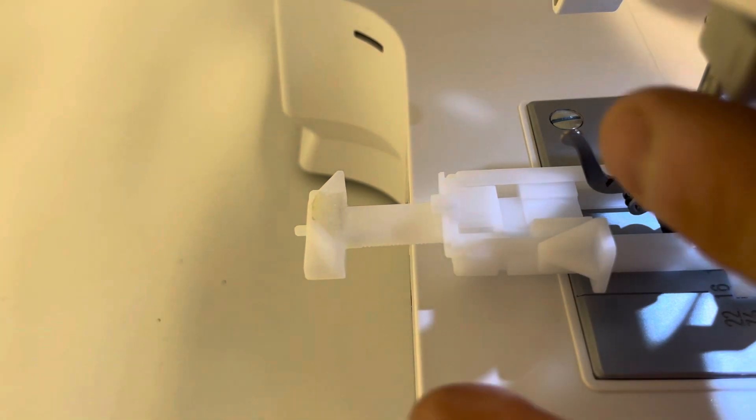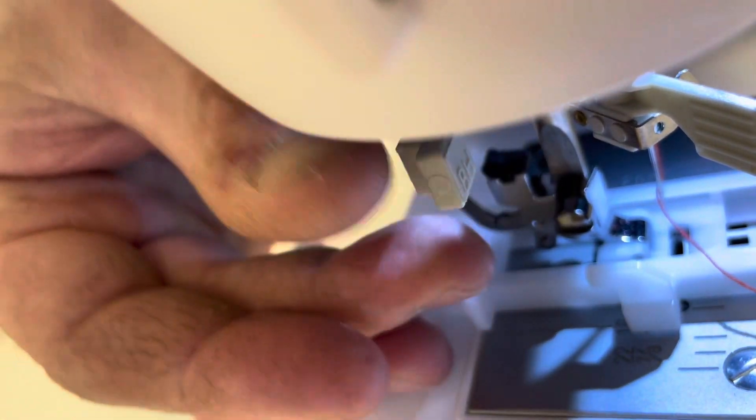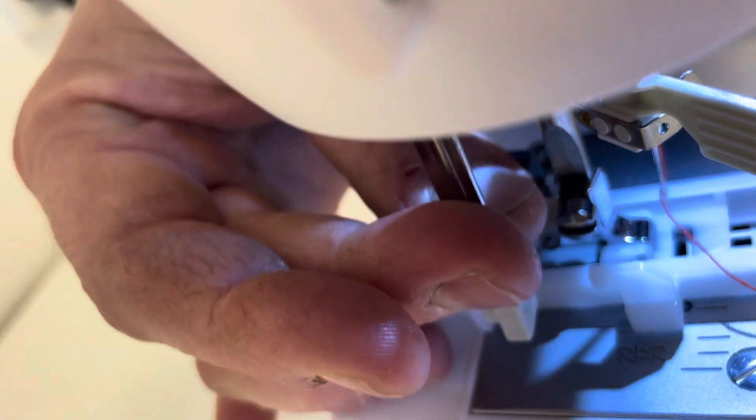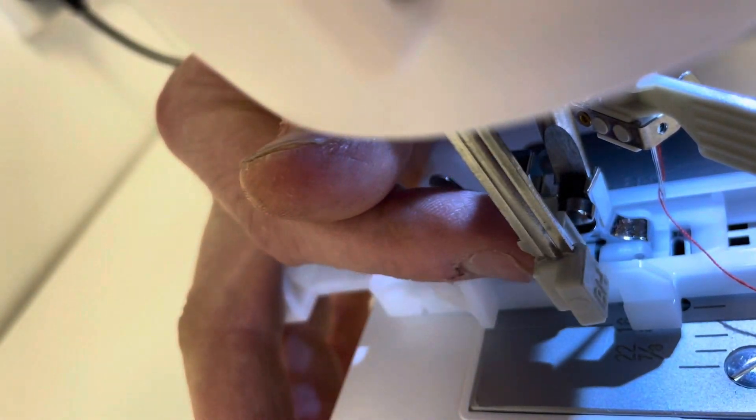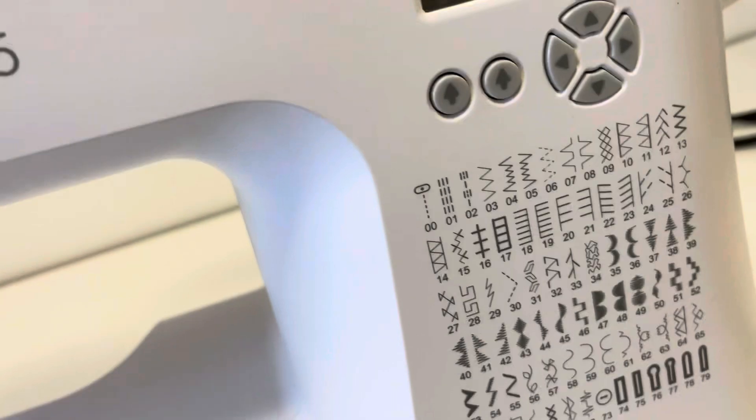Now there is a lever just underneath here that needs to be pulled down all the way and that goes in between the two brackets on the buttonhole foot just there which is one just here and one just there and that slides in between the two. We're now going to select our buttonhole stitch.